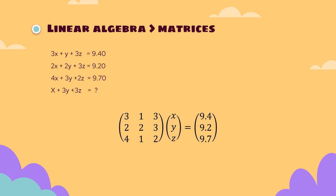For the linear algebra, we got the matrix [3 1 3; 2 2 3; 4 1 2] corresponding to X, Y and Z, and equals to 9.4, 9.2 and 9.7.